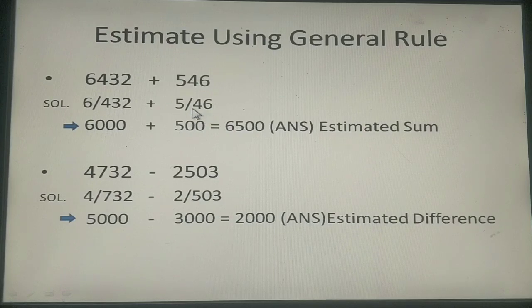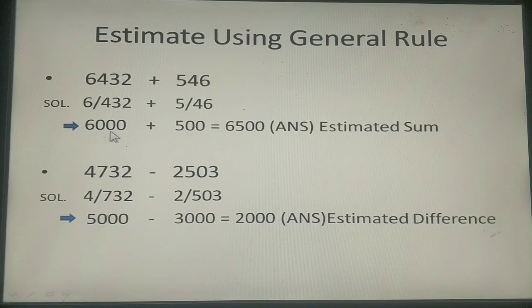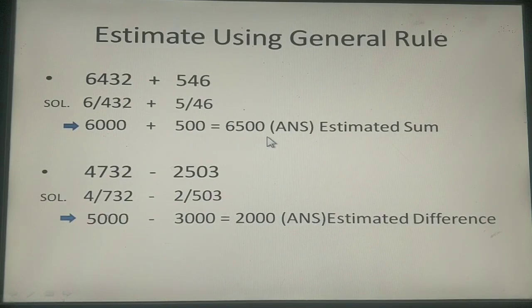Again here. This is 4 which is again smaller than 5. So we would not add 1 to the number 5 here. We will keep it as it is. And so the rounded off number is 500. Hence the answer on adding 6500 you would get is 6500. Which would be your estimated sum.